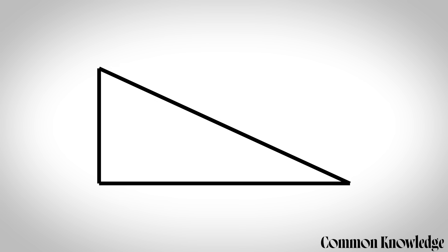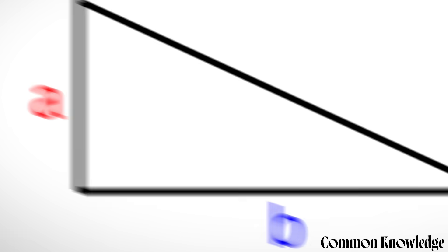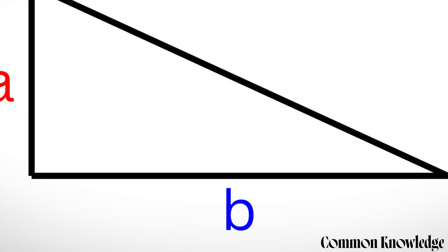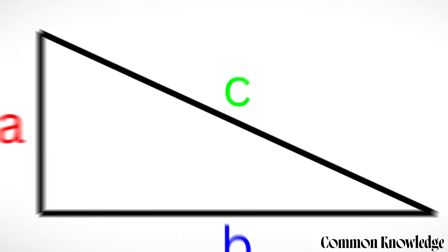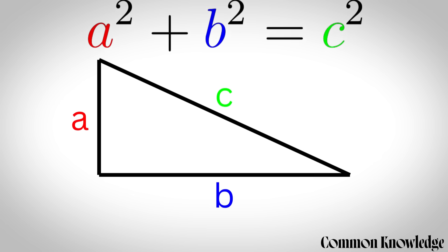Pythagoras' theorem says that if you've got a right-angled triangle and you label two sides as a and b, then the third side c can be found using a squared plus b squared equals c squared.